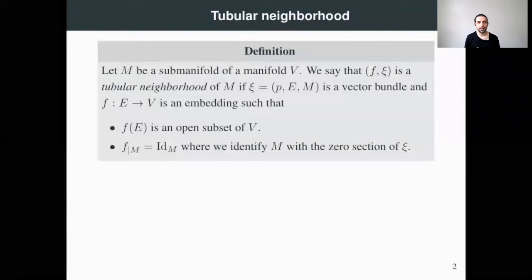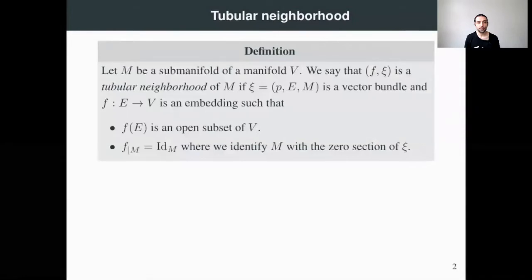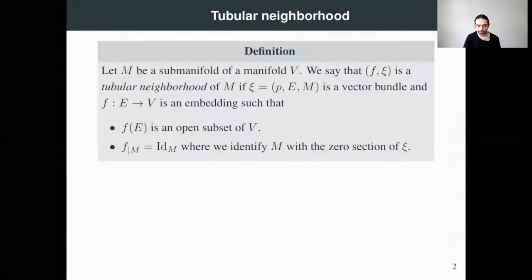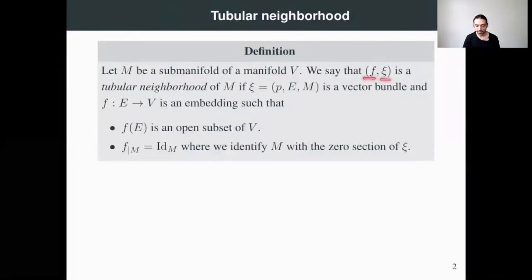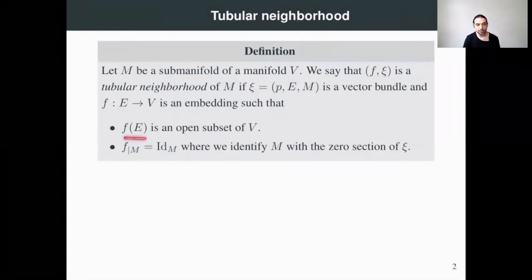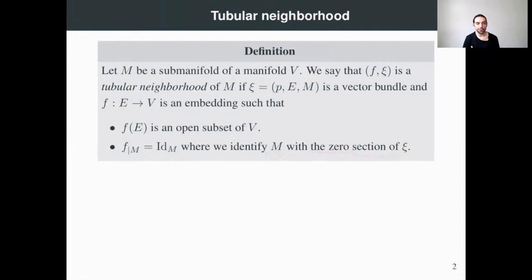First, let us define a tubular neighborhood of a submanifold. Let M be a submanifold of manifold B. We say that (F, psi) is a tubular neighborhood of M if psi is a vector bundle over M, and we have an embedding F from E to B such that the image of E is an open subset of B and the restriction of F to M is the identity of M, where in E we are identifying M with the zero section of our vector bundle.